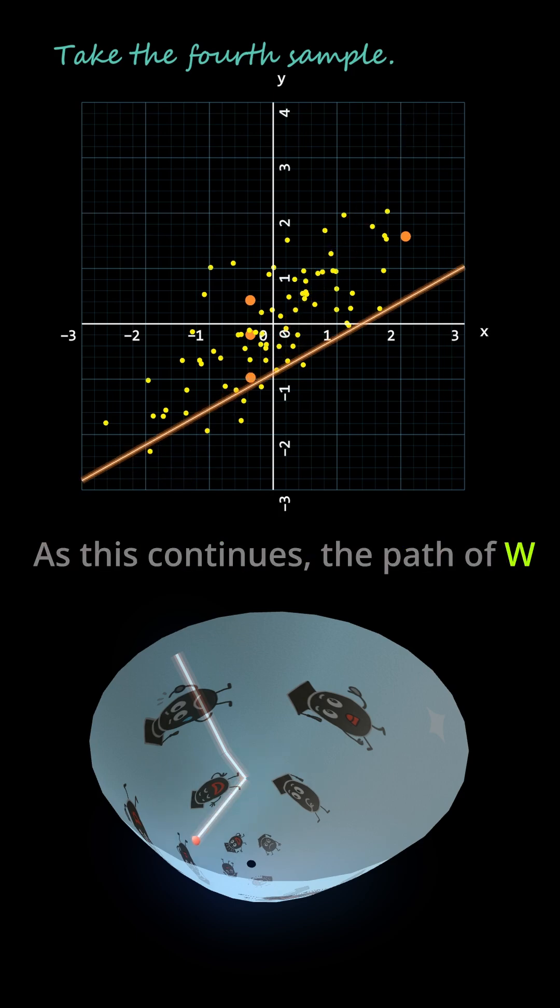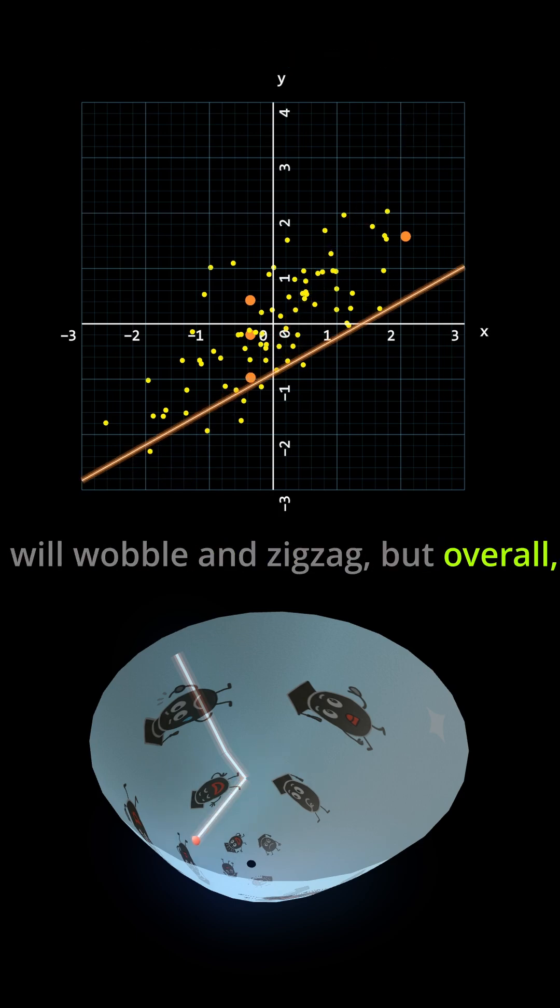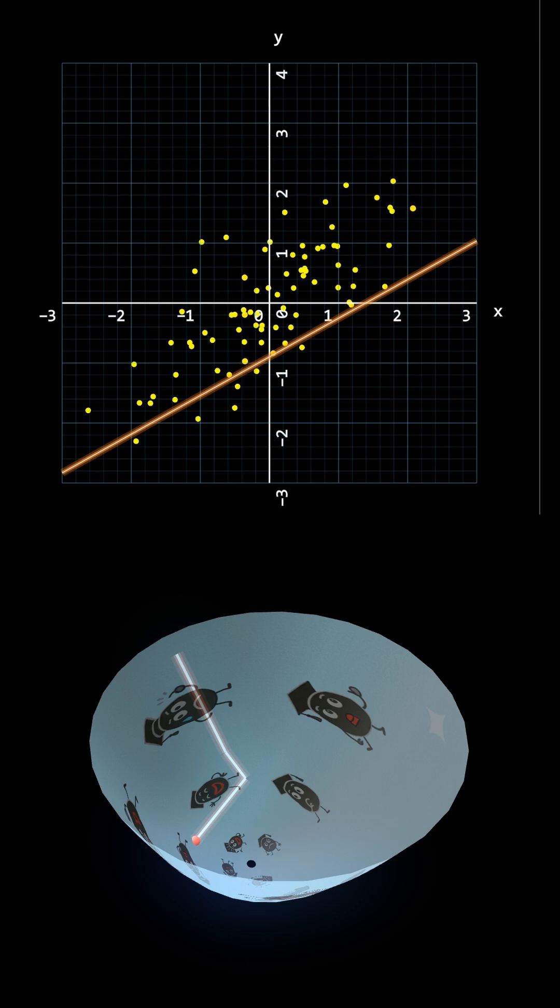As this continues, the path of W will wobble and zigzag, but overall, it moves toward a better solution. Makes sense, right?